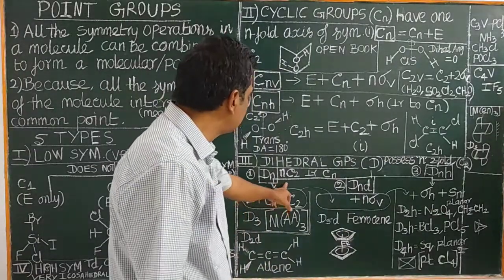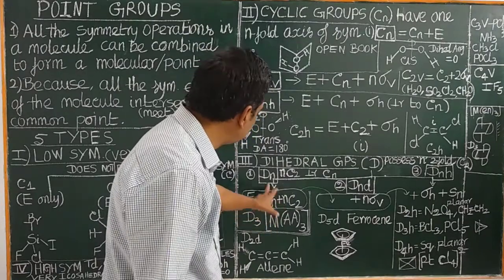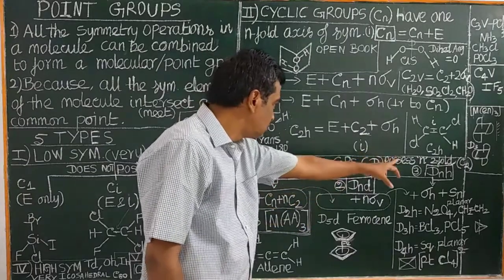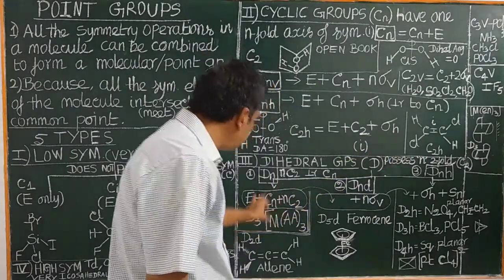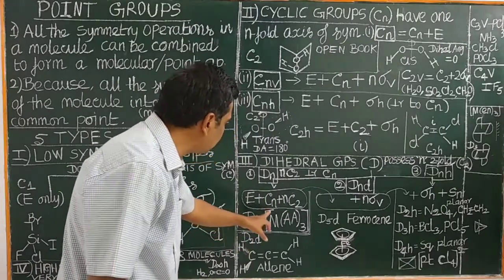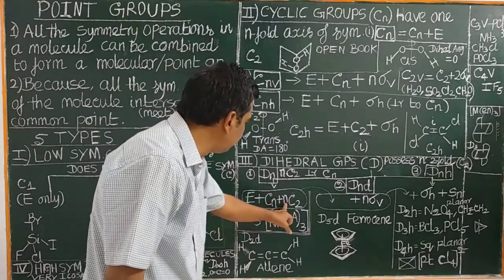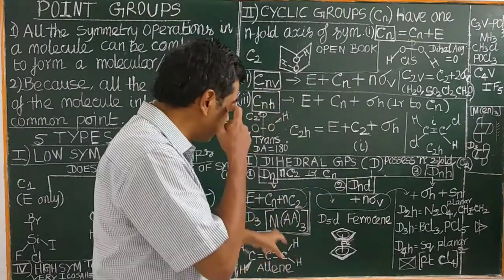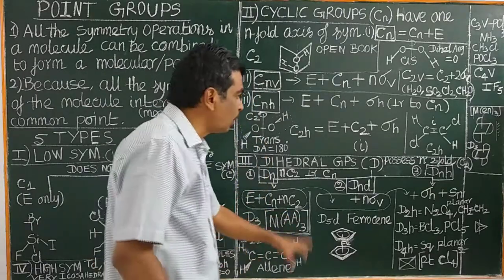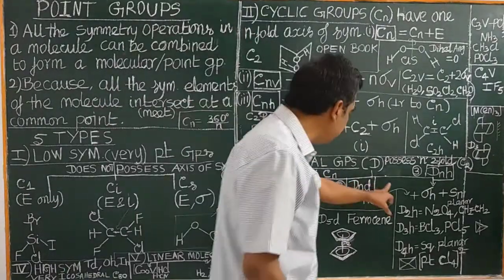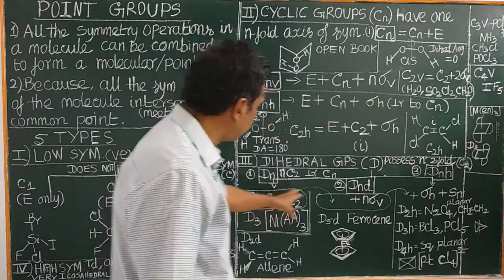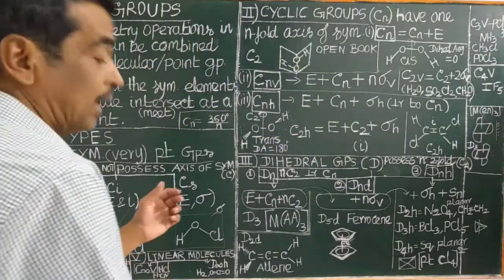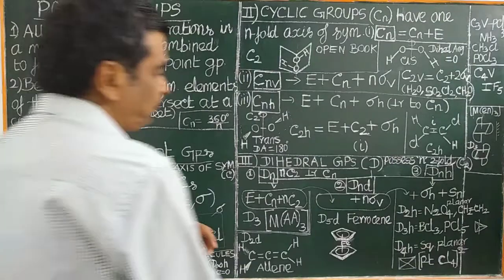For example, Dn: D3 possesses E, C3, and 3C2 — a metal tris(ethylenediamine) complex is one example. Next, DnD: in addition to the Dn elements, DnD possesses N sigma_d — N dihedral planes of symmetry. For example, D5D ferrocene in the staggered conformation.